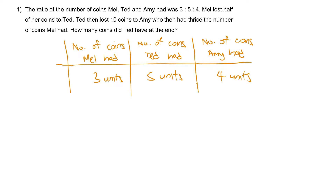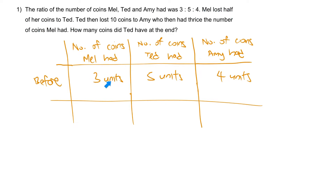This is the 'before' state. Mel initially had 3 units and lost half, which is one and a half units. However, we don't really like to deal with decimals or fractions, so we use whole numbers. We can multiply by 2 to get 6 units to 10 units to 8 units.